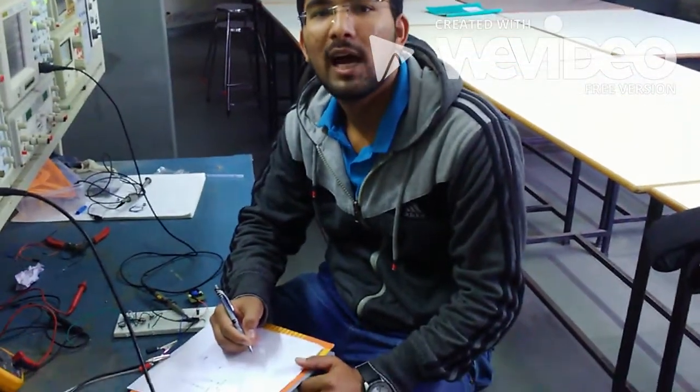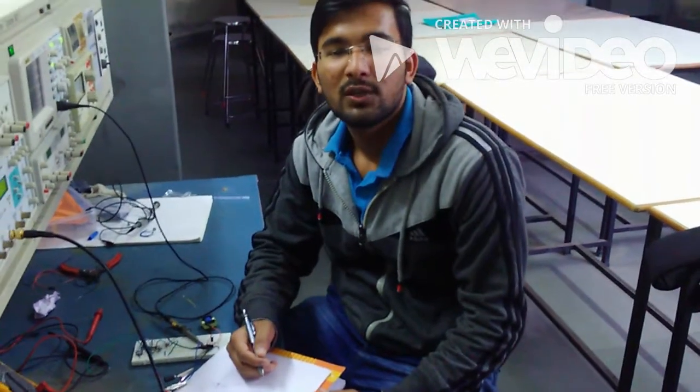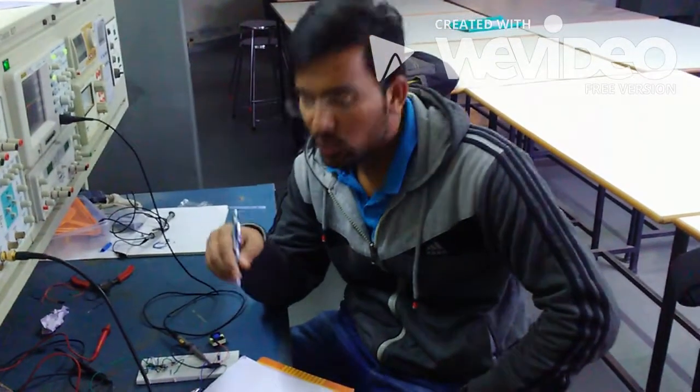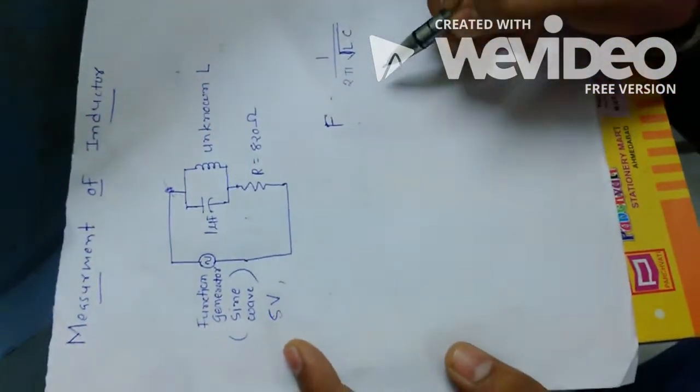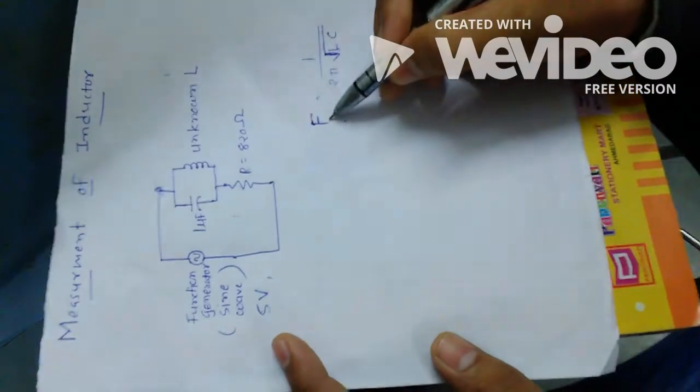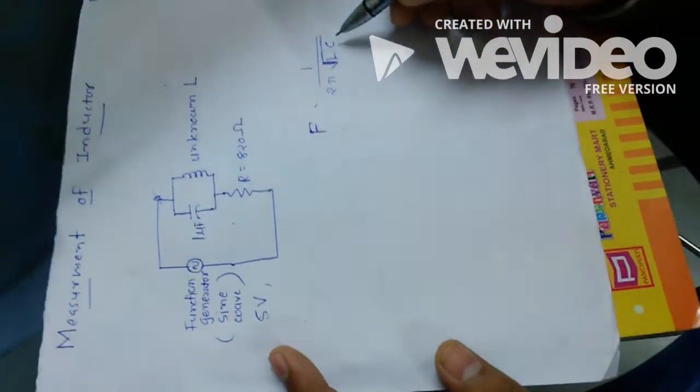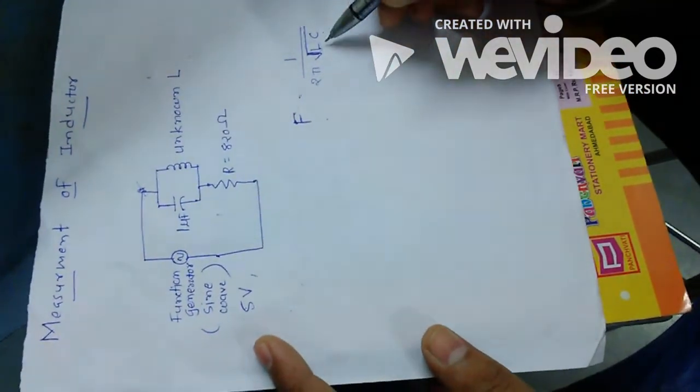I am going to explain how to measure unknown inductance using the resonant frequency method. This is the equation for finding the unknown inductance: the frequency is equal to 1 by 2π√LC. If we have a value of the capacitor and the resonant frequency, we can find the unknown inductance.